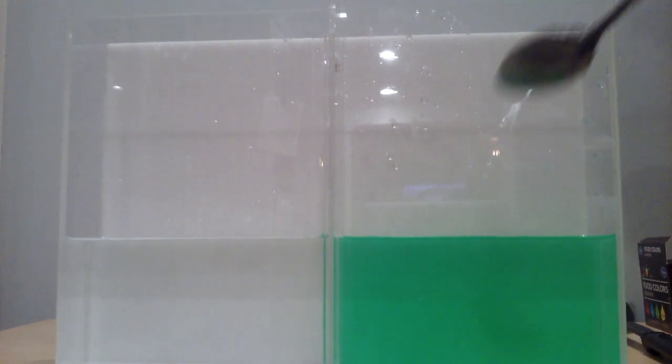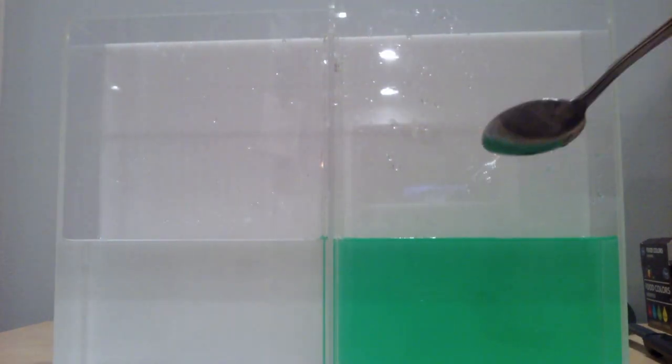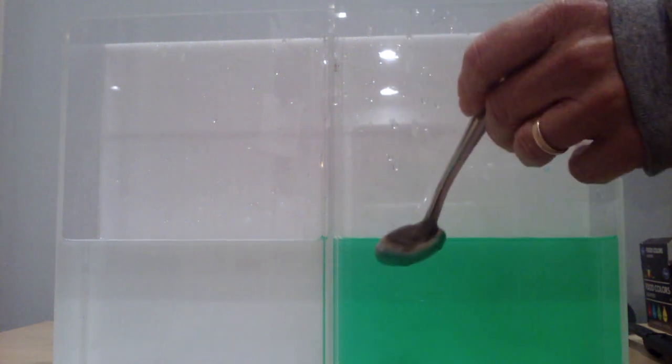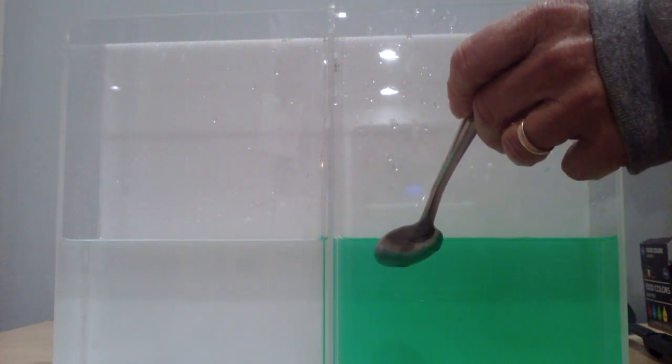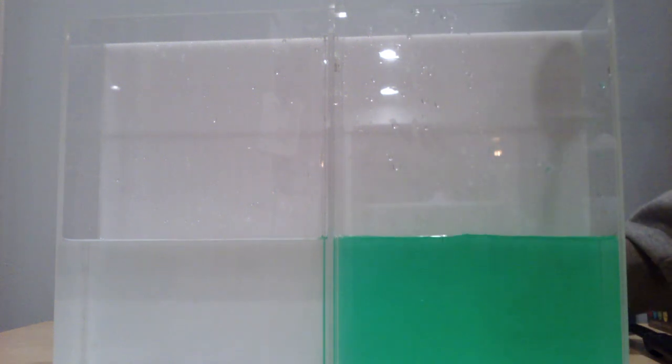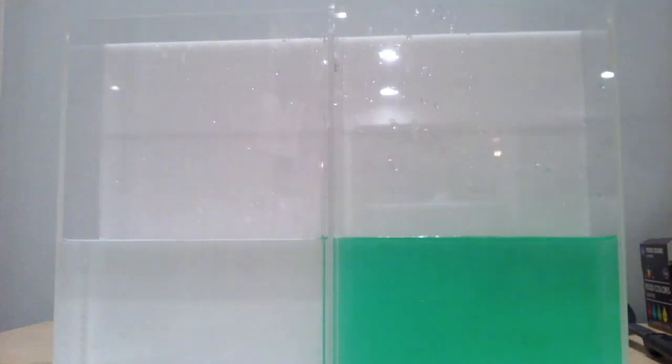We're going to show how differences in salinity can cause currents. On this side we'll have very salty water. In fact, we're going to pour some salt into it: one, two, three, let's go one more, four. And on this side of the container we have fresh water.